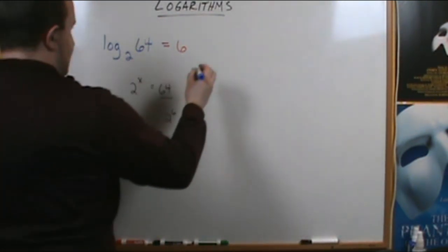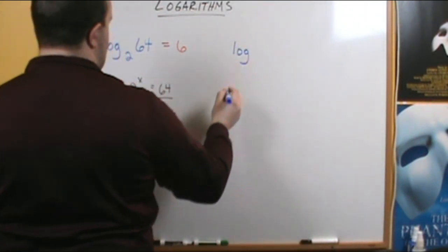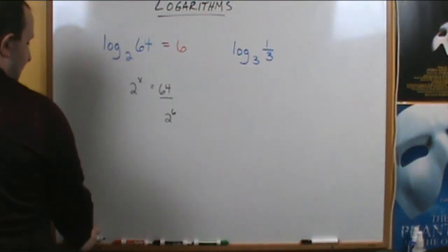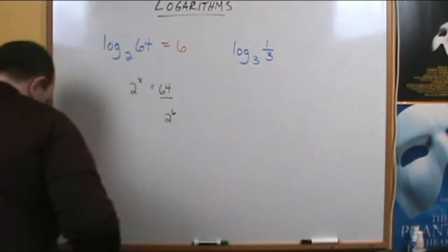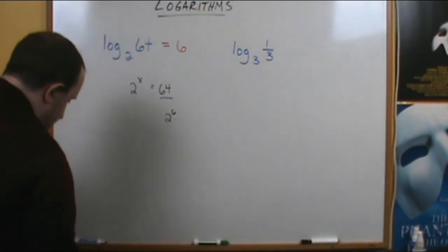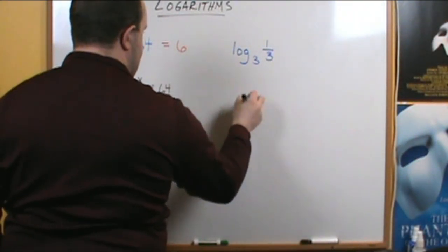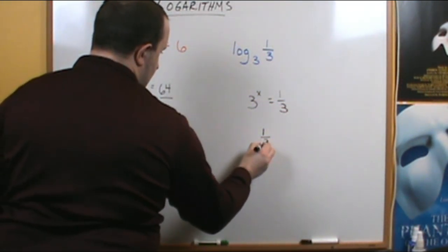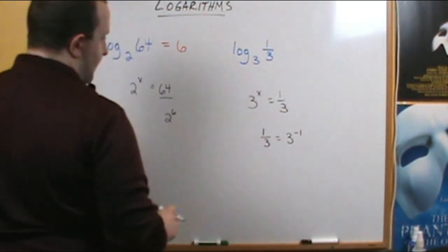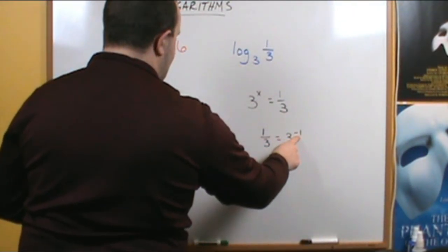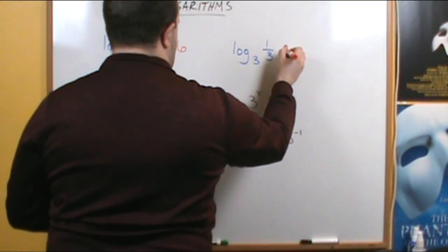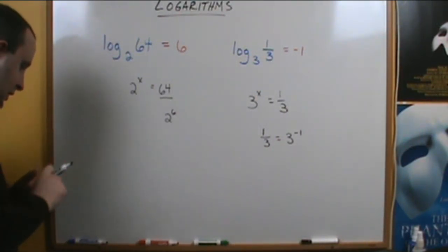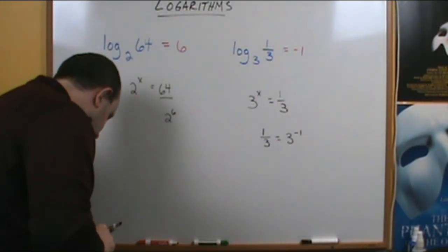What about the log with base 3 of 1/3? We have to think: 3 to what power gives us 1/3? Well, 1/3 is the same thing as 3 to the negative 1. So 3 raised to the negative 1st power is 1/3, meaning the log base 3 of 1/3 equals negative 1. That's how to evaluate logarithms and convert between exponential and logarithmic form.